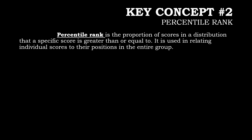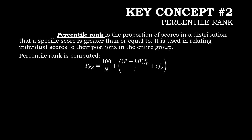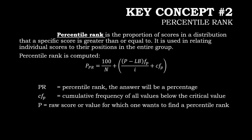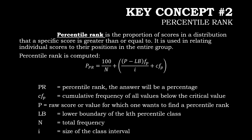For our key concept number 2, the percentile rank. Percentile rank is a proportion of scores in a distribution that a specific score is greater than or equal to. It is used in relating individual scores to their position in the entire group. Percentile rank is computed by the formula: PR equals 100 over N, times the quantity of P minus LB, multiplied by the frequency, divided by I, plus CF sub P. Where PR is the percentile rank expressed as a percentage, CF sub P is the cumulative frequency of all values below the critical value, P is the raw score, LB is the lower boundary, N is the total frequency, and I is the size of the class interval.